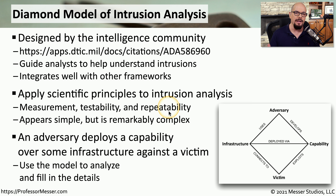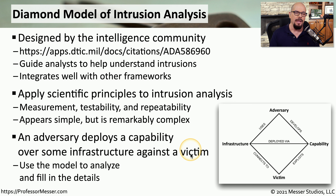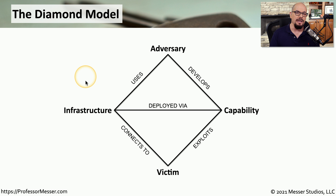As a broad example of how you would apply this model, let's take a scenario where an adversary has deployed a capability over some infrastructure against a victim. You can use the Diamond Model to understand the relationships between all those different pieces and gather details and documentation to fill in the blanks regarding this intrusion. This is the Diamond Model. You can see there are four corners: adversary, capability, victim, and infrastructure.